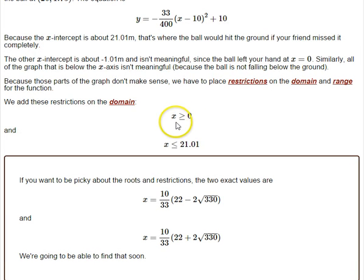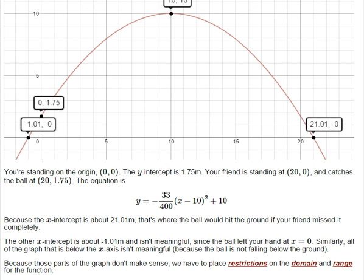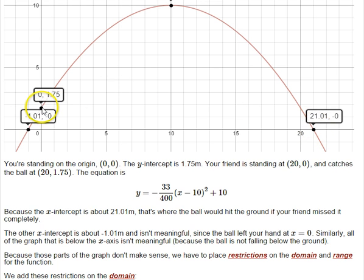So starting with x, we don't want x to be negative, so x has to start at 0. And we can't get past where it hits the ground, so 21.01, that's right here. So we only want x to be valid from here over to here. That's this restriction on the domain.